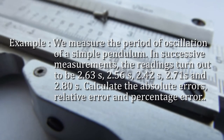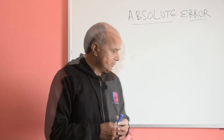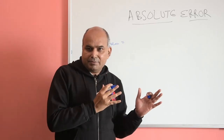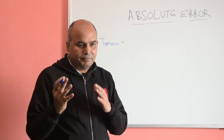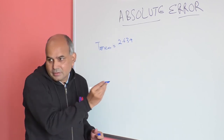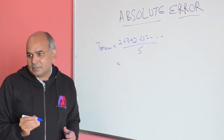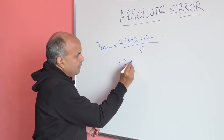Now let us take an example. We want to measure the period of oscillation of a simple pendulum. In successive measurements, the readings are: 2.63 s, 2.56 s, 2.42 s, 2.71 s, and 2.80 s. We need to calculate the absolute error, relative error, and percentage error. The mean time = (2.63 + 2.56 + 2.42 + 2.71 + 2.80) / 5 = 2.62 seconds.